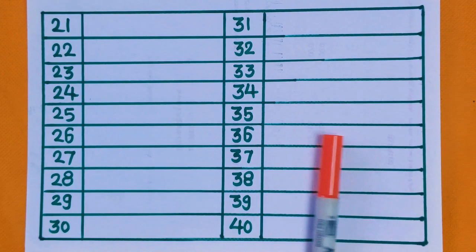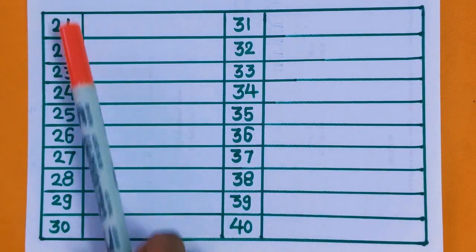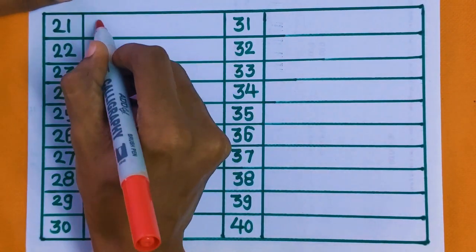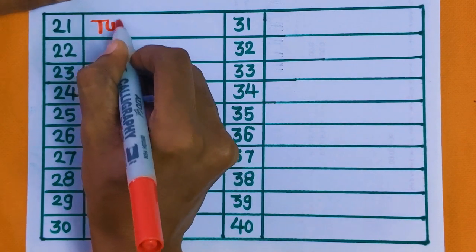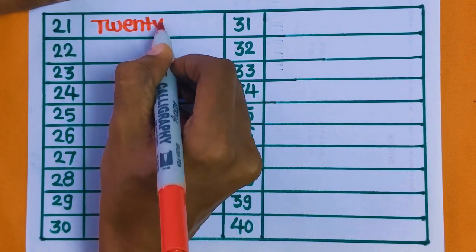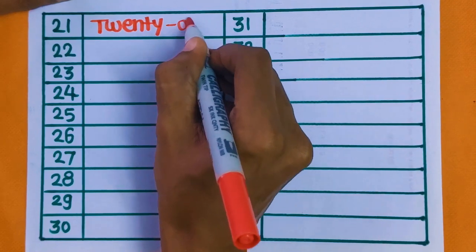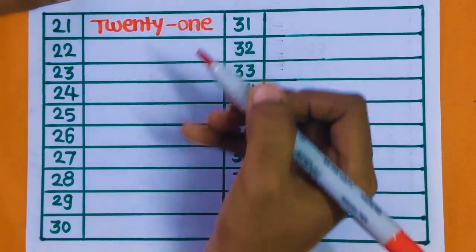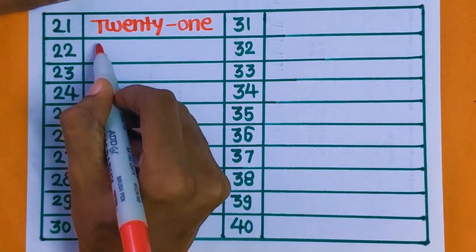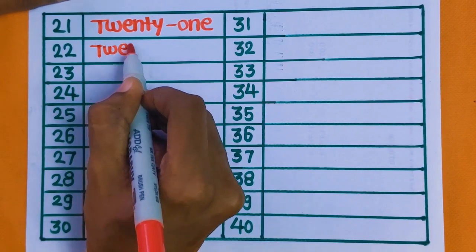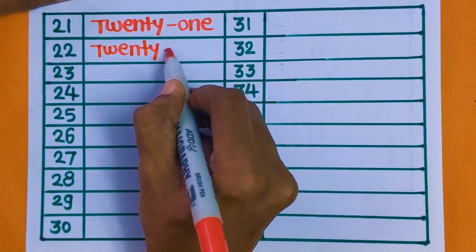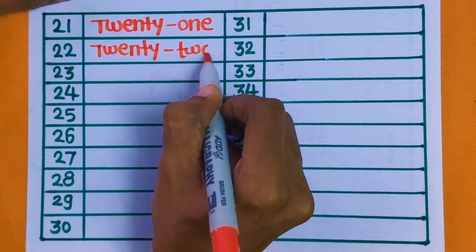Let's write number names from 21 to 40. 21 — TWENTY ONE. 22 — TWENTY TWO.